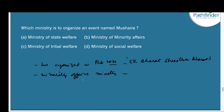Next question: Which ministry organized the event named Mushaira? The correct answer is the Ministry of Minority Affairs. Obviously, Mushaira falls under the purview of the Minority Affairs Ministry. This was organized in February 2021 and the theme of the event was Ek Bharat, Shrestha Bharat. The Minority Affairs Minister is Mukhtar Abbas Naqvi.